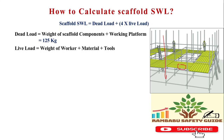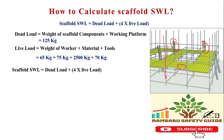Next, how to calculate the live load. The weight of workers: you will see here two people are working, and we will also have additional tools. Two people weigh 65 kg and 75 kg respectively. There is also some material of approximately 225 kg and about 170 kg. Now we are going to add the total numbers together and master the formula.